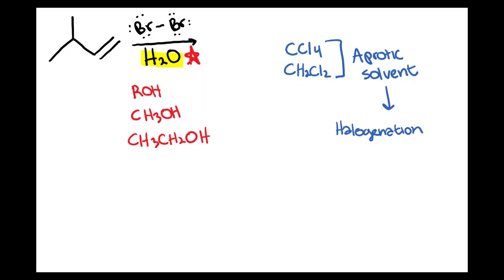Here we have a halohydrin formation reaction. The way that we know this is halohydrin formation is because we're reacting a double bond or an alkene with Br2. Remember we could also use Cl2 for example. The important thing for you guys to hone in on however is the solvent.